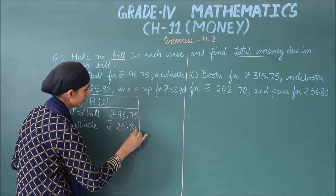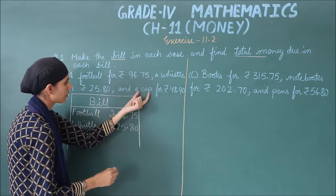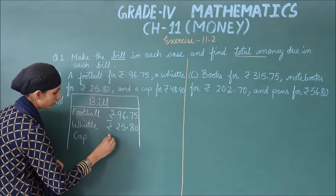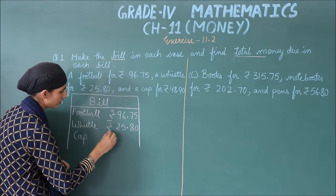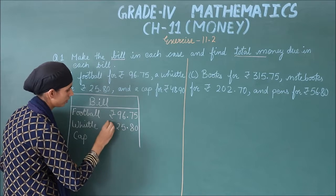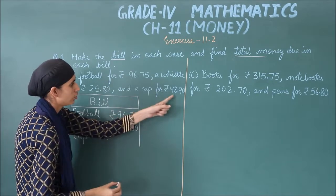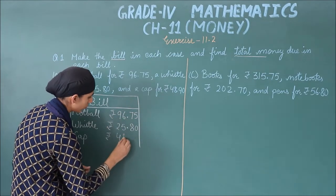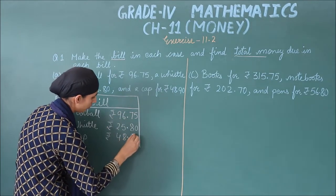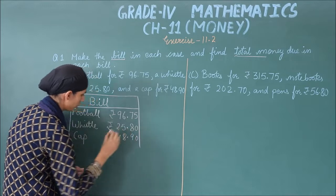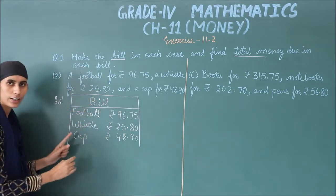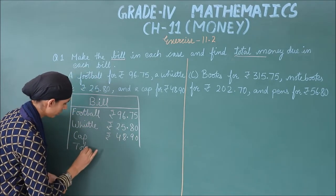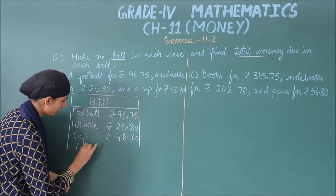Write it like this. Next item: Cap, for ₹48.90. Now write the Total row below all the items.